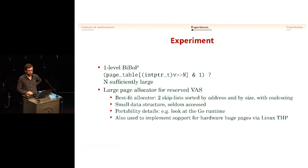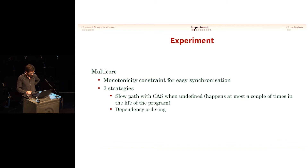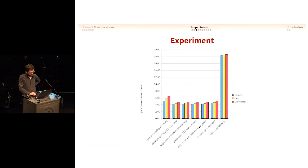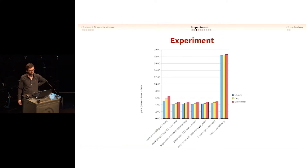I used that to implement support for huge pages using Linux transparent huge pages. Then I had to deal with the multi-core implementation and show that it scales. For that, I use a monotonicity constraint that makes synchronization trivial, and it's sufficient for interesting uses of the page table. There are two strategies: either take a slow path when there is an unknown entry and do a CAS — which happens almost never, making it a very well-predicted branch — or use dependency on the ordering on ARM. These are the results: the measure is the pace, which is the number of nanoseconds it takes to decide that one word needs to remain live in the OCaml heap during marking.